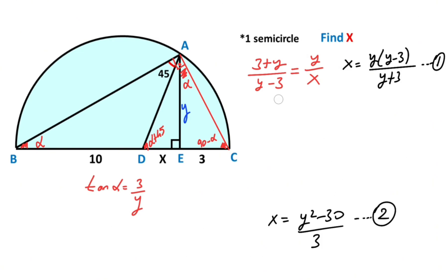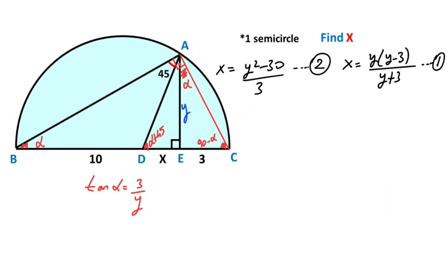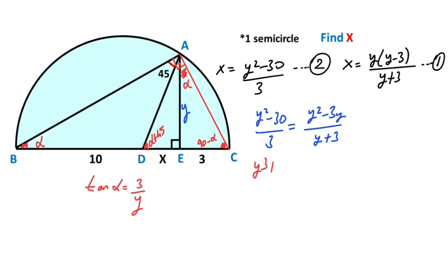Let's clear here. Notice that these two equations are both equal to x, so if we equalize them: (y² − 30)/3 equals y(y − 3)/(y + 3). After cross multiplication: y³ + 3y² − 30y − 90 equals 0.